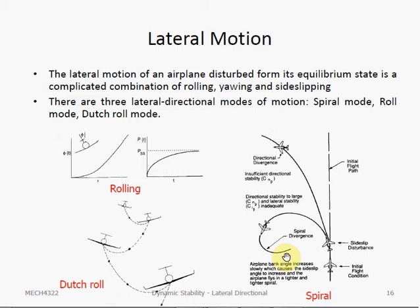The motion is very gradual, so most of the time pilots can correct for it unconsciously. However, if the airplane enters into a spiral motion with no corrective action by the pilot, the spiral can become tighter and steeper over time, leading to a spiraling diving motion. The spiral mode can be stable but it can also be unstable. It is a non-oscillatory motion, so we characterize it by a first order system.